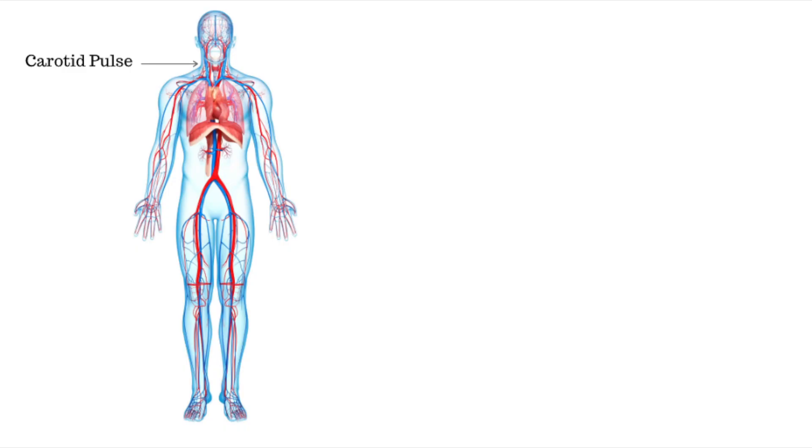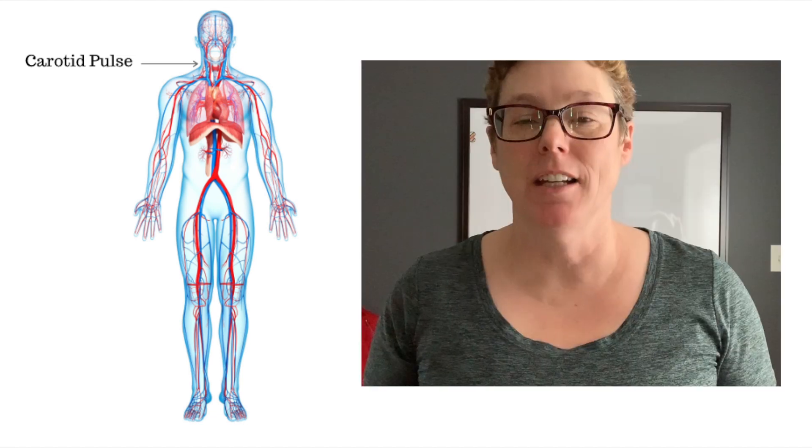We're going to talk about several different pulse sites, and the ones in particular that most nurses on the floor would be focused on. Typically on a med-surg floor, nurses would be focused on the radial pulse and the dorsalis pedis pulse. We'll focus on those two but talk about where all the others are as well, beginning at the head and working our way down to the toe, starting with the carotid pulse.